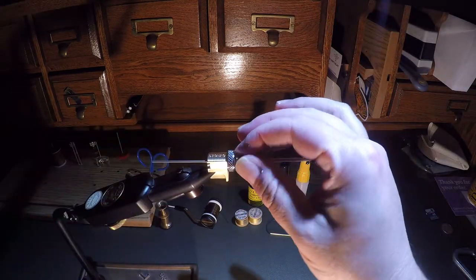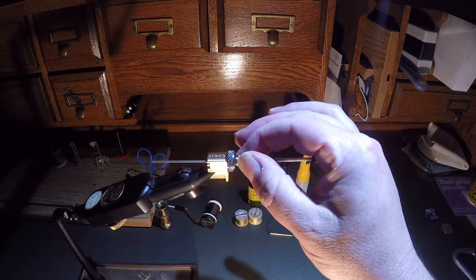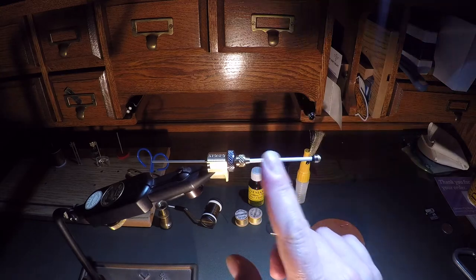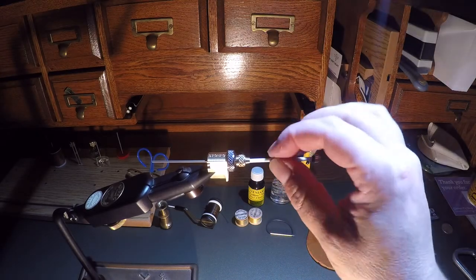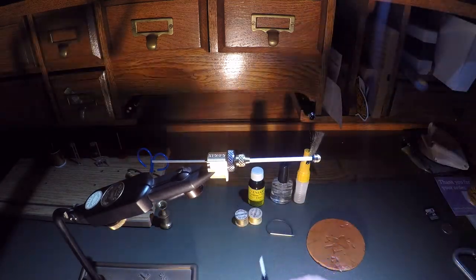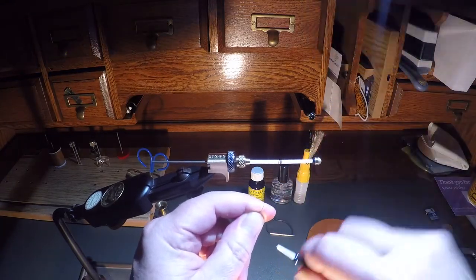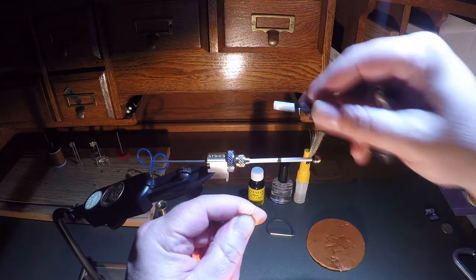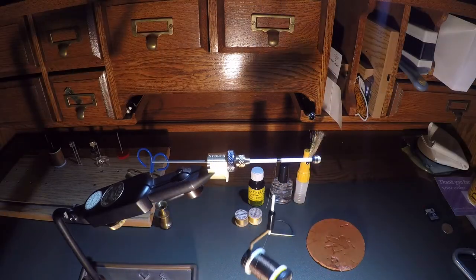I'm just going to tighten this by rotating this collar towards me and that's going to push this tube up against the rubber in here, and now that tube does not spin. So it's super easy to get your thread started on there without any issue whatsoever.